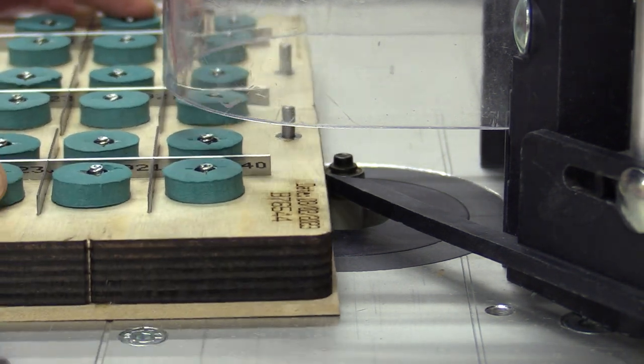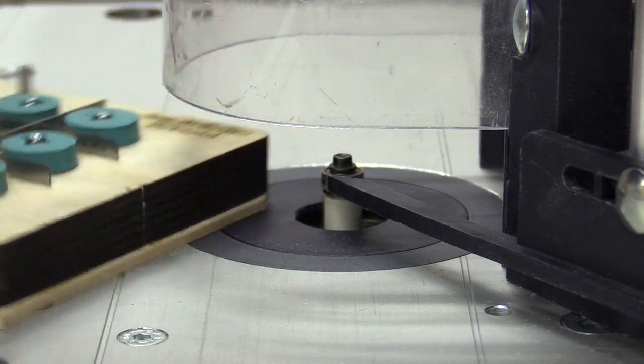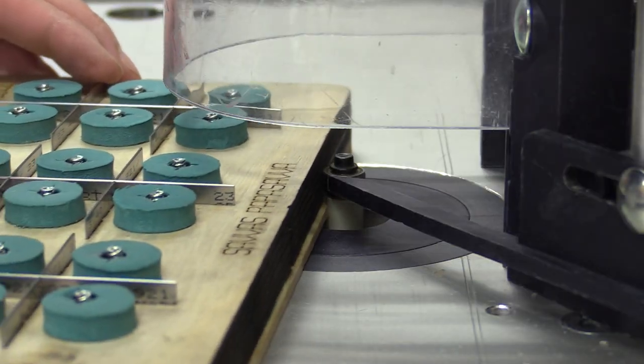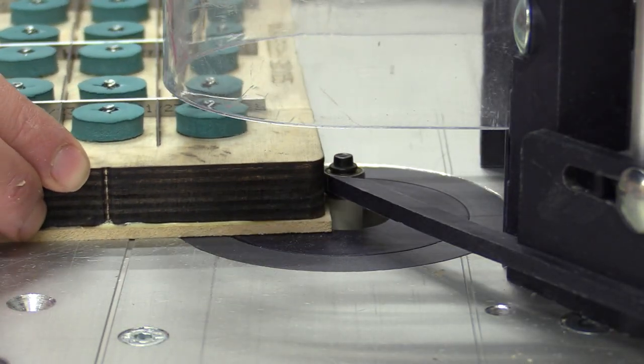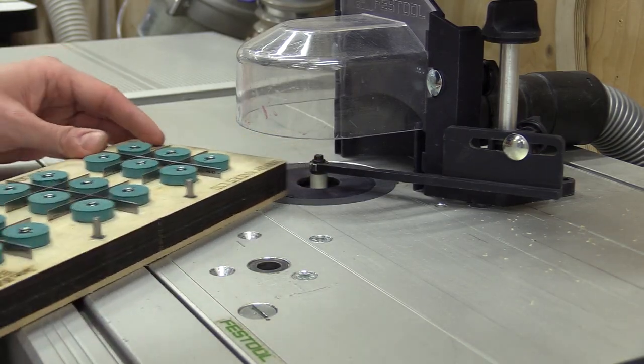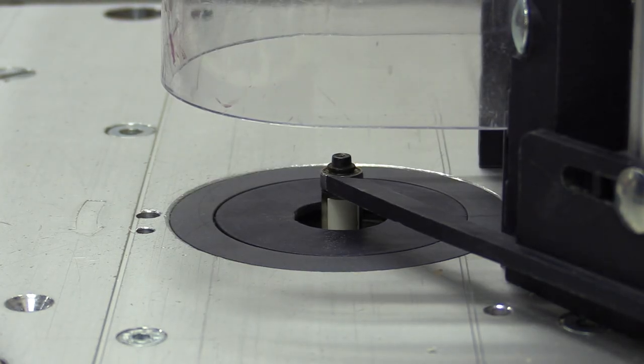Once I'd finished trimming the MDF backing to size against the former, I turned my attention to the press. I wanted to ensure the upper pressing plate is parallel to the base plate, so when it is used, consistent pressure is applied.